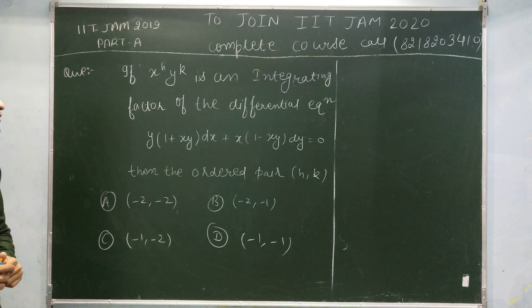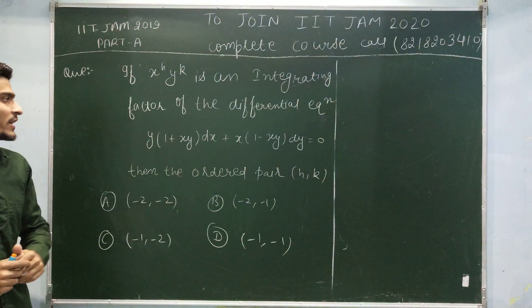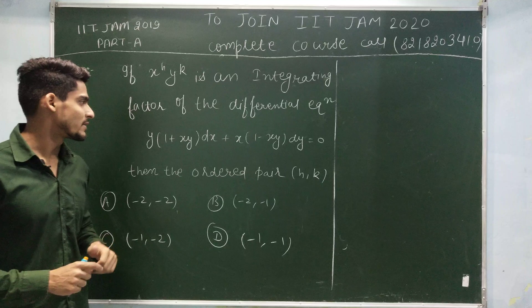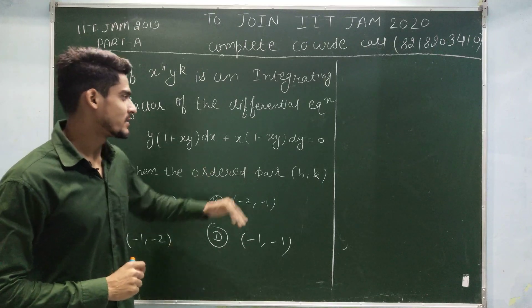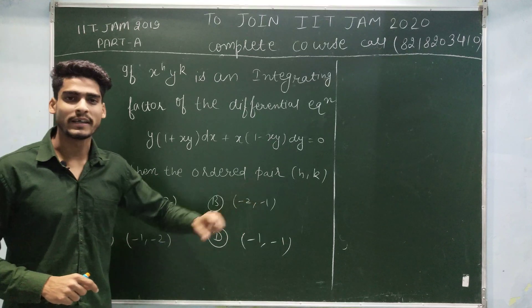Question is if x to the power h y to the power k is an integrating factor of the differential equation y times (1 plus xy) dx plus x times (1 minus xy) dy is equal to 0, then the ordered pair (h, k) is.